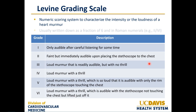Murmurs were first described by René Laennec, a French physician, in 1819, after which the significance of murmurs became a matter of debate. By the late 19th century, many physicians regarded systolic murmurs as organic, whereas others believed they were often functional. Samuel Levine became a central figure in separating functional from organic systolic murmurs. Freeman and Levine's 1933 study of 1,000 non-cardiac subjects determined the frequency, cause, and significance of systolic murmurs, giving rise to the Levine grading scale — a numeric scoring system to characterize the intensity or loudness of a heart murmur.